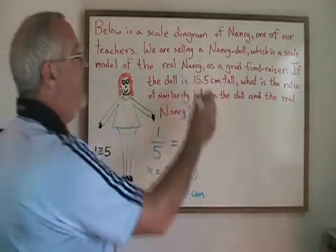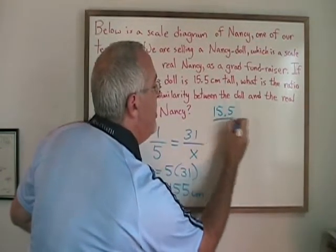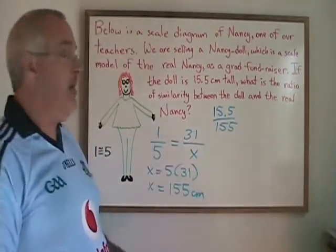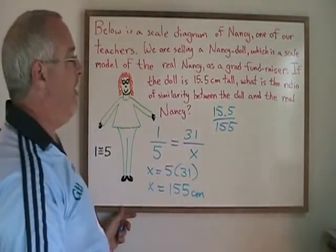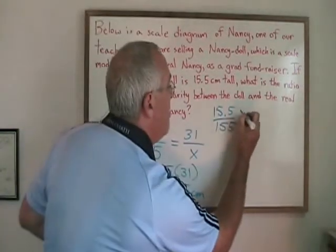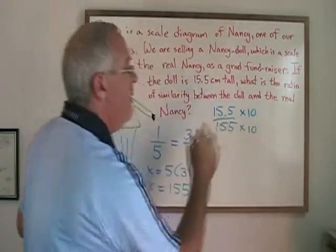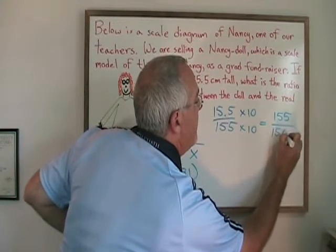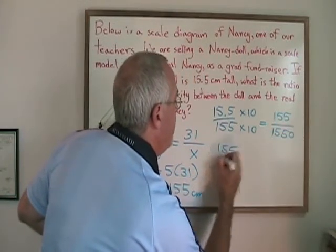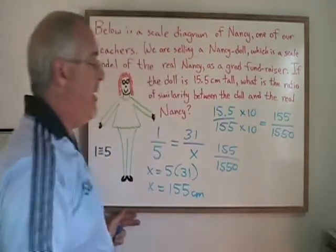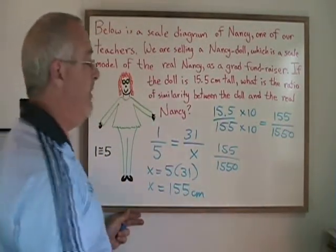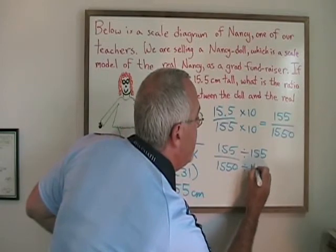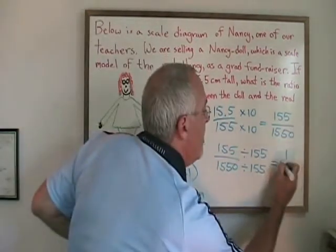Now we can take the height of the doll, 15.5, and put it over the height of the real Nancy, 155. We have a ratio of similarity between the doll and Nancy, but this can be simplified. I'll multiply both top and bottom by 10 to get rid of the decimal in the numerator, giving 155 over 1550. Since 155 and 1550 have a common factor of 155, I divide both top and bottom by 155 and get 1 over 10.